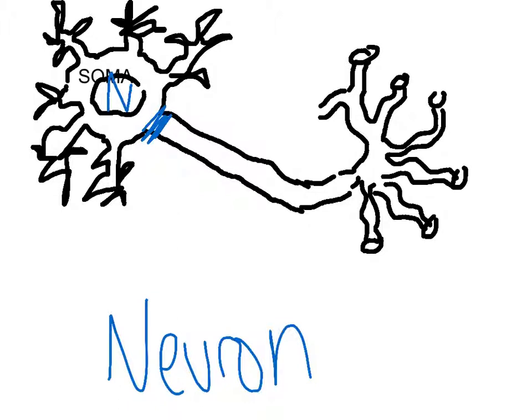As the messages pass through the axon, which basically just sends messages, it must go through these myelin sheaths surrounding the axon, and these provide not only protection for the axon, but also speed up the whole process of sending the message.